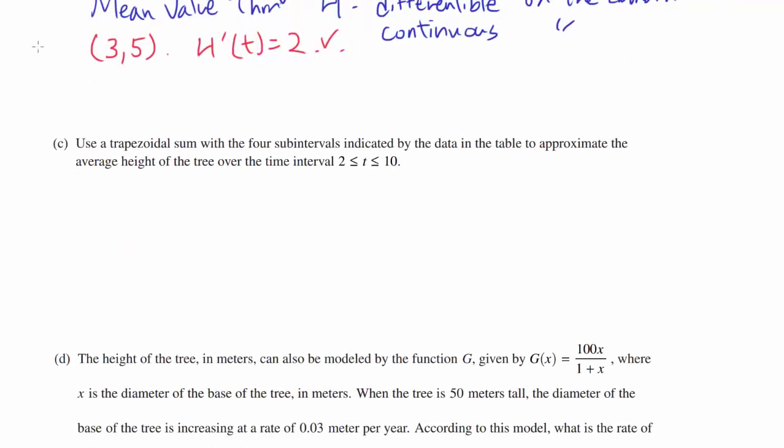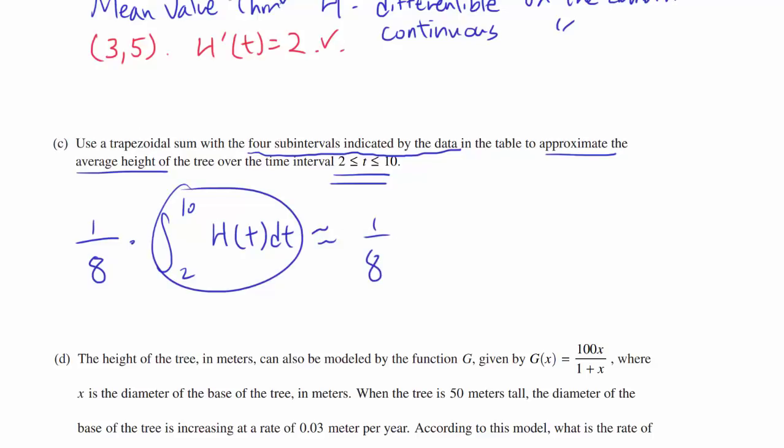Let's go on to part C. Use a trapezoidal sum with the four subintervals indicated by the data, and we are approximating the average height of the tree from 2 to 10. The average height is going to be 1 over the interval, so 10 minus 2, or 1/8 times the definite integral from 2 to 10 of our function H(t) dt. We are going to use trapezoidal sum to approximate this definite integral.